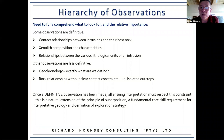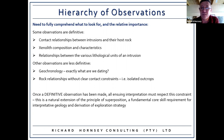Once you make a definitive observation, all ensuing interpretation must respect this constraint. For instance, if you see a chilled margin it is absolutely 100% definitive and you don't need to see 100 of them — you only need one. Xenoliths as well: if you have a deformed xenolith inside a non-deformed intrusion, it is definitive. You only need to see one.